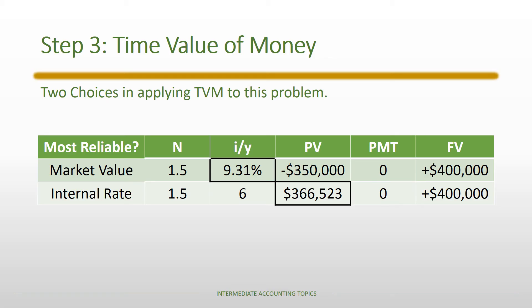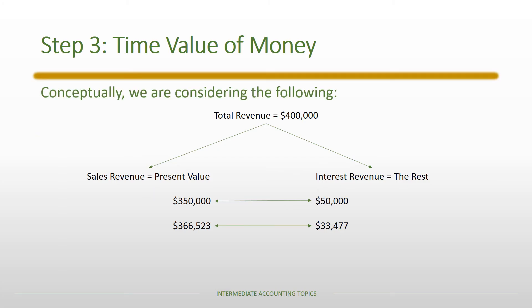If we use the market value, the yield is 9.31%. If we use the internal borrowing rate, the present value is $366,523. Conceptually, total revenue is $400,000; we must allocate it between sales revenue and interest revenue. Sales revenue is the present value of the $400,000, and interest revenue is the amount above that present value. If market price is most reliable, sales revenue is $350,000 and interest revenue is $50,000. If the borrowing rate is more reliable, sales revenue is $366,523 and interest revenue is $33,477.